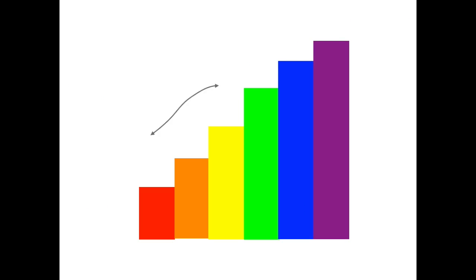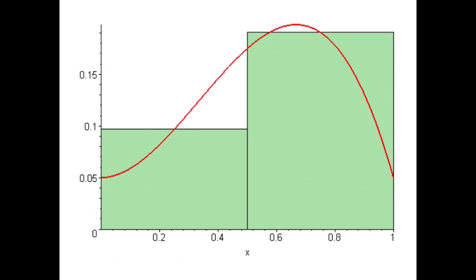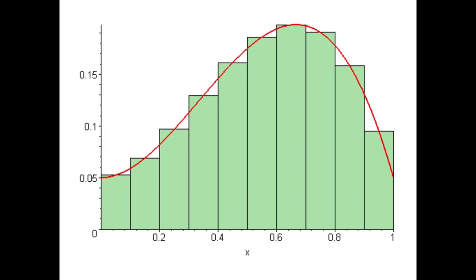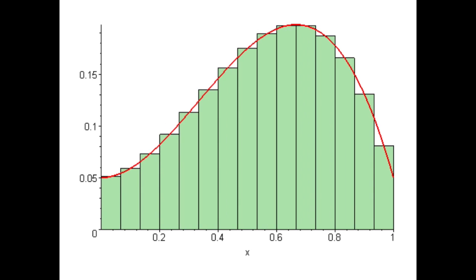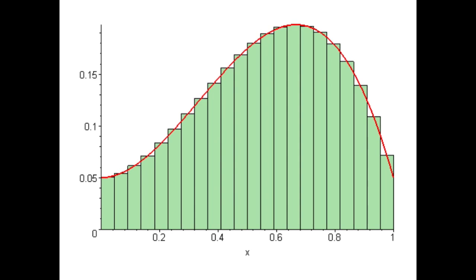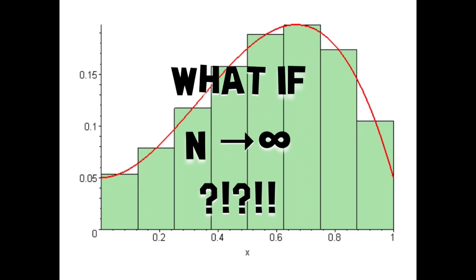Tell me class, what do you see? A rainbow? A bar graph? What about this? There are many methods to approximate curves: Riemann sums, trapezoidal rule. The greater the n value, the closer the approximation is. But what if n approaches infinity?